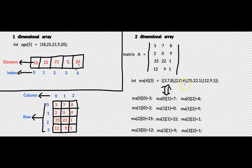We can assign the values as: {3, 7, 8}, {2, 0, 9}, {25, 22, 1}, {12, 9, 1}. Or you can assign the value one by one. Both methods are the same. If you use one-by-one assignment: A[0][0]=3, A[0][1]=7, A[0][2]=8, continuing until A[3][2]=1.